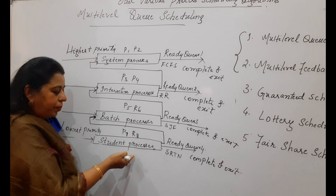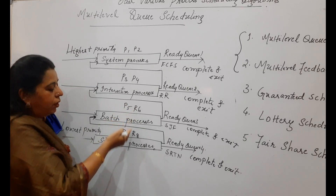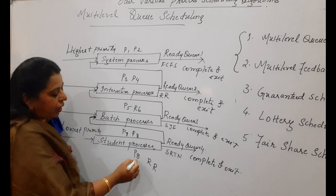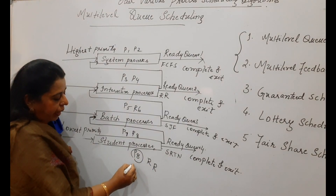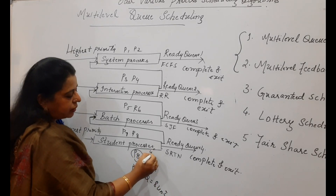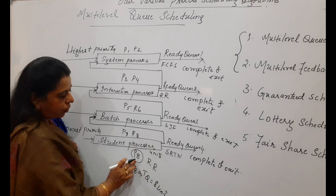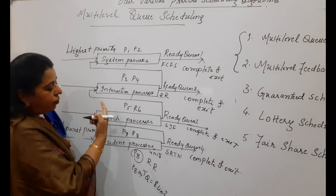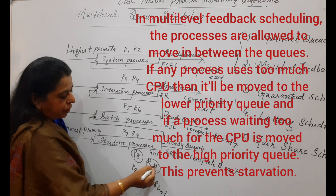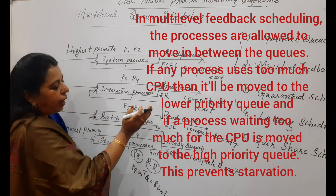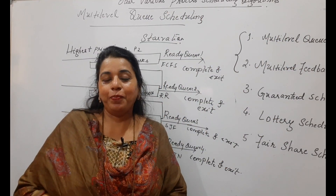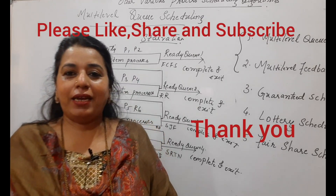With this feedback mechanism, a lower-level process is allowed to move to a higher-level queue, avoiding starvation. For example, if process P8 is executing with Round Robin with a burst time of 8 units and completes 4 units, it can move to the next higher-level queue via the feedback mechanism, where the remaining 4 units are executed. This is how Multi-Level Feedback Scheduling works. I hope this session is useful — please like, share, and subscribe. Thank you, bye.